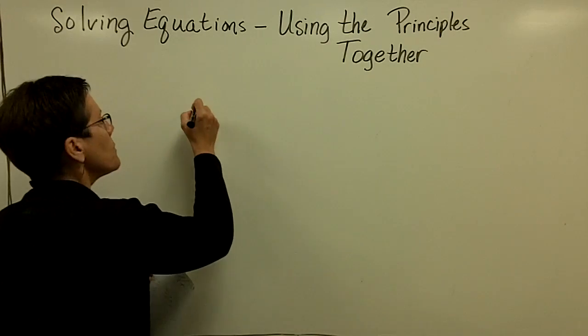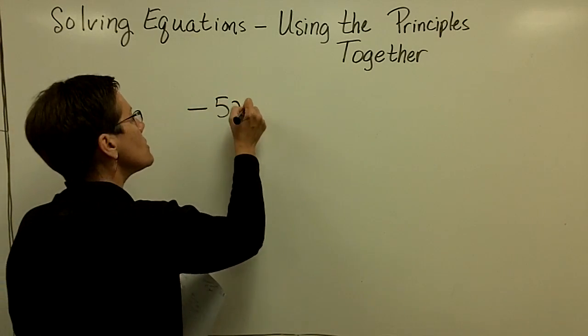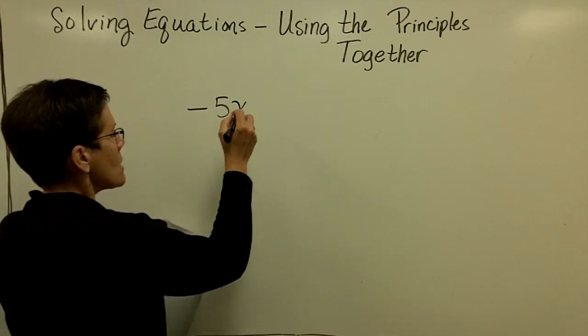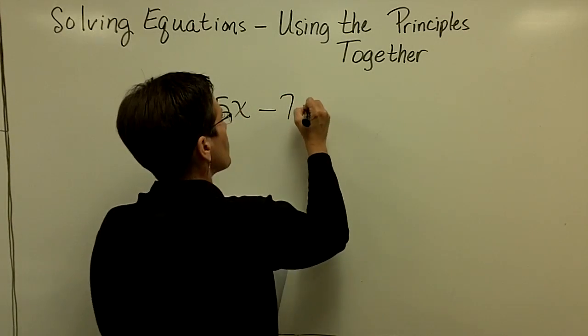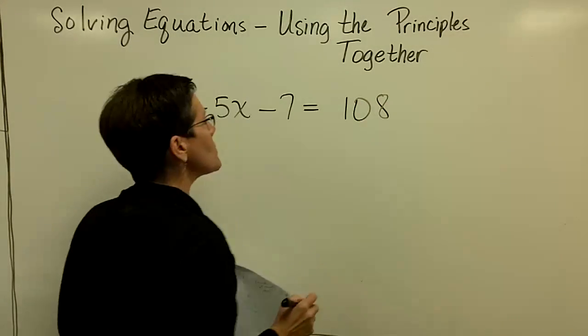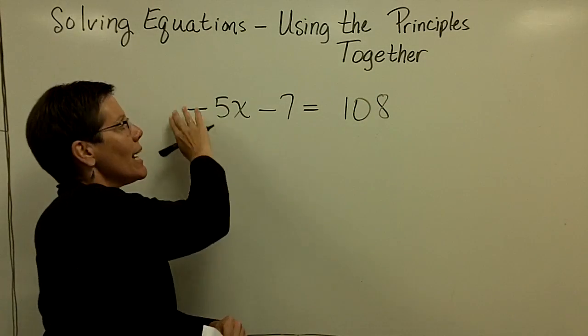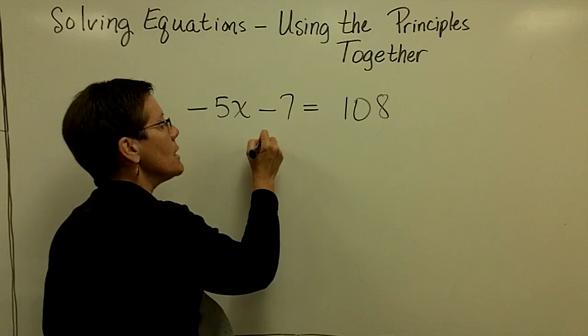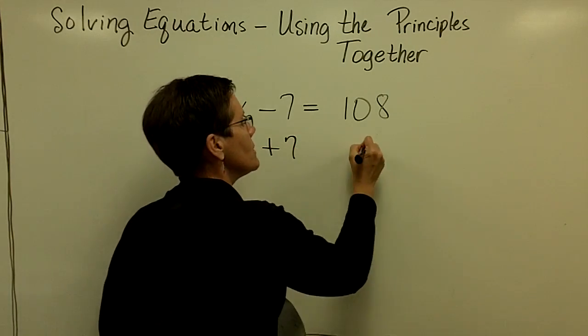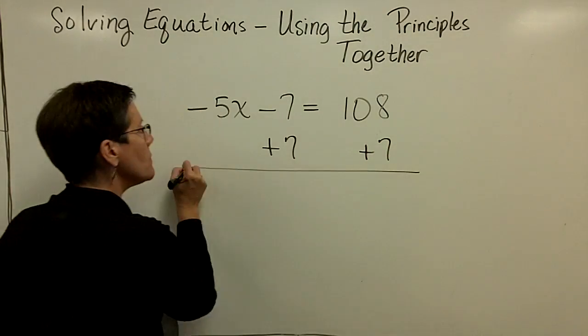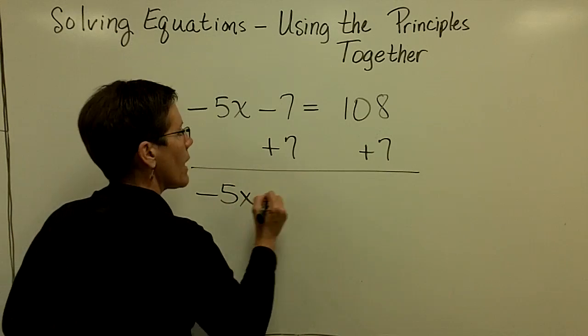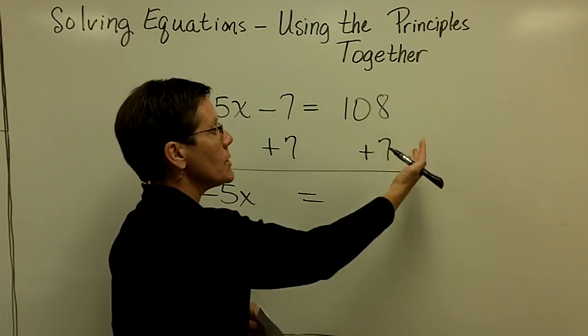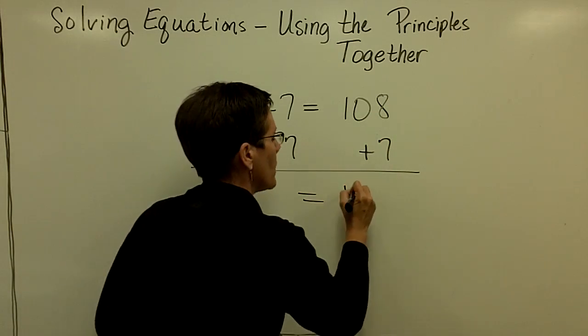Let's go with some negative coefficients in front of x. I don't know why I chose such large numbers sometimes. I'm going to try to isolate this term by adding 7 to both sides of this equation. So I'll have a negative 5x equals, and 108 plus 7 is 115.